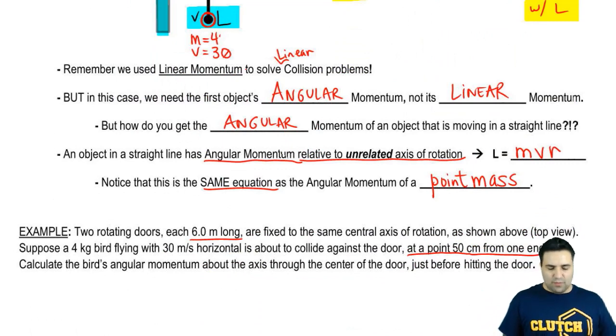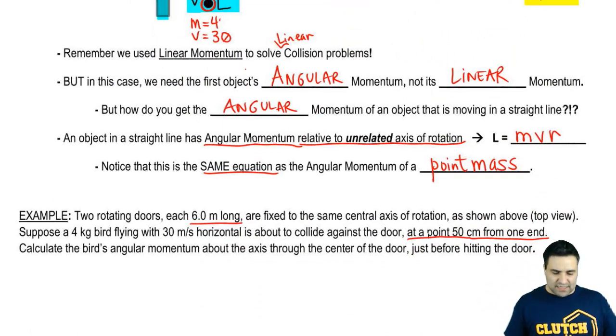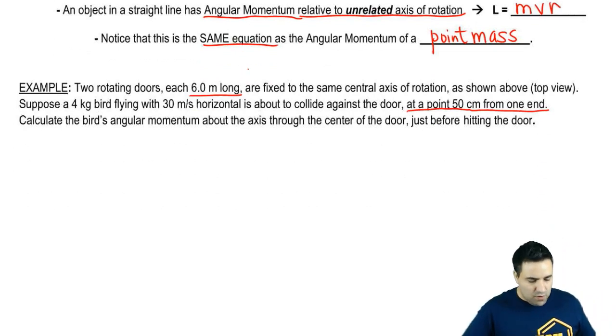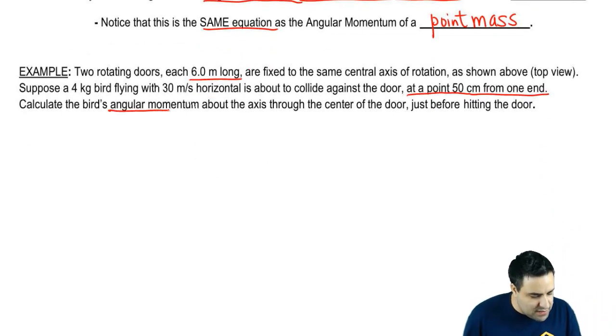We want to know the bird's angular momentum about the axis through the center of the door just before hitting the door. Again, the angular momentum of an object in linear motion is given by L equals M V R.